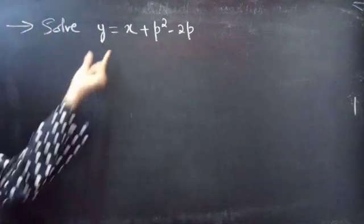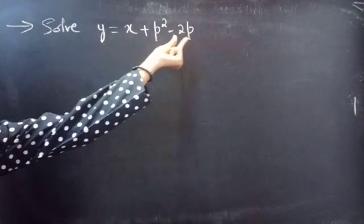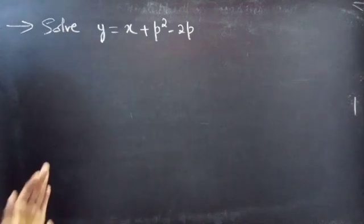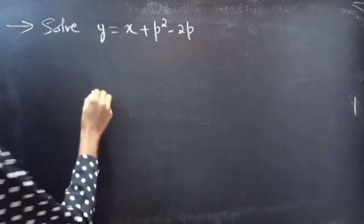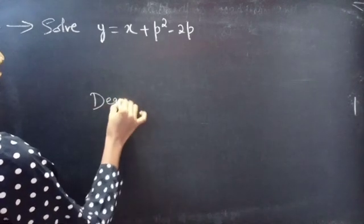Problem: solve y equals x plus p squared minus 2p. Firstly, let's see the degrees of x, y, and p.